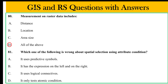Spatial selection using the attribute table: it uses predicted symbols, it has an expression on the left and on the right, C. it uses logical connections, D. it only creates atomic conditions. The atomic condition in the attribute selection.